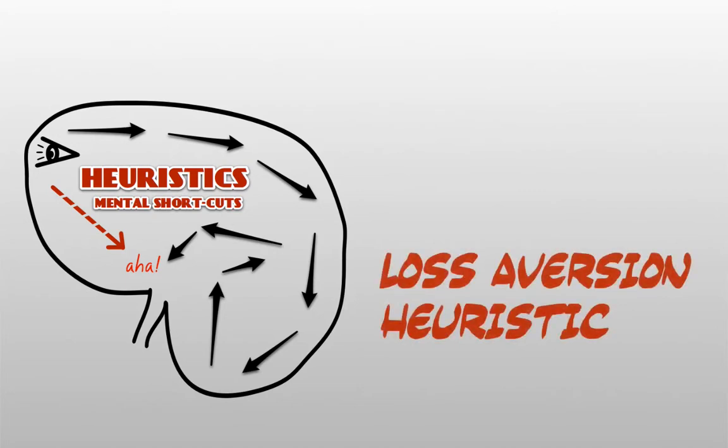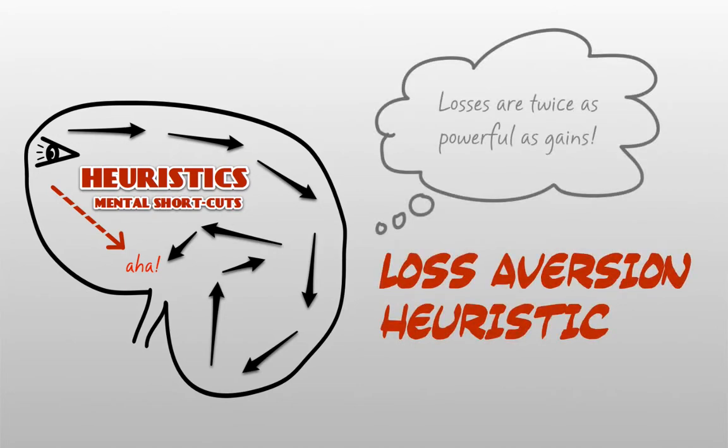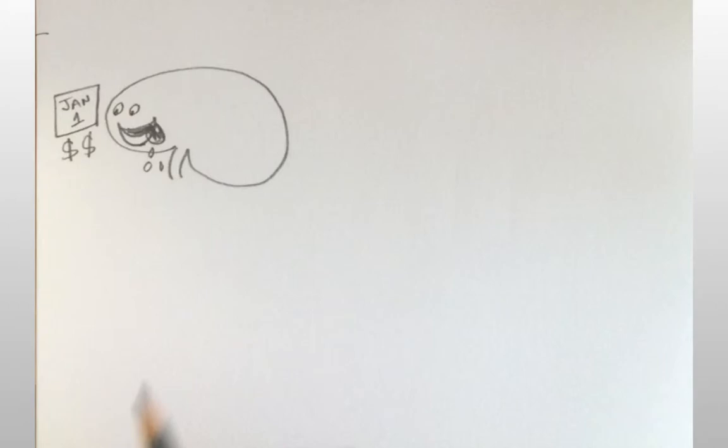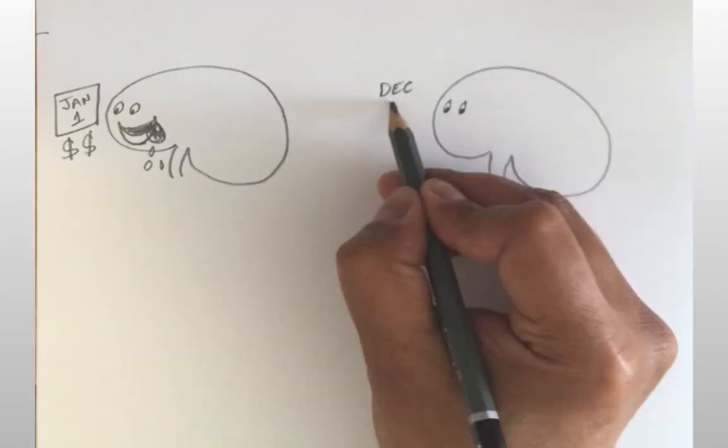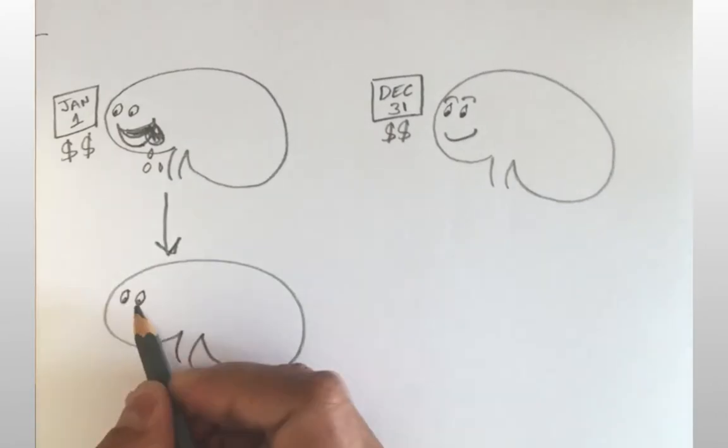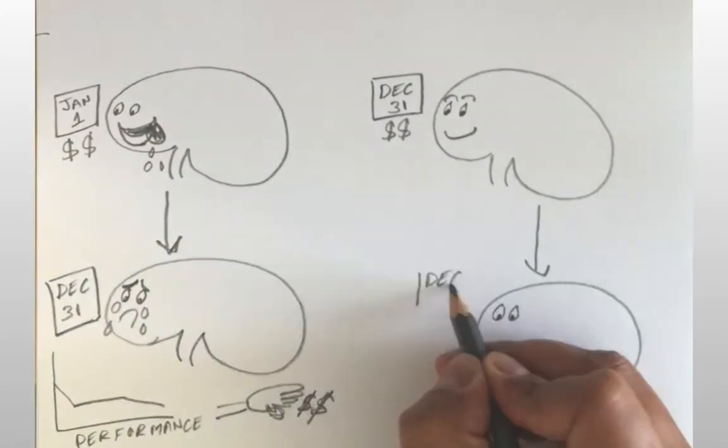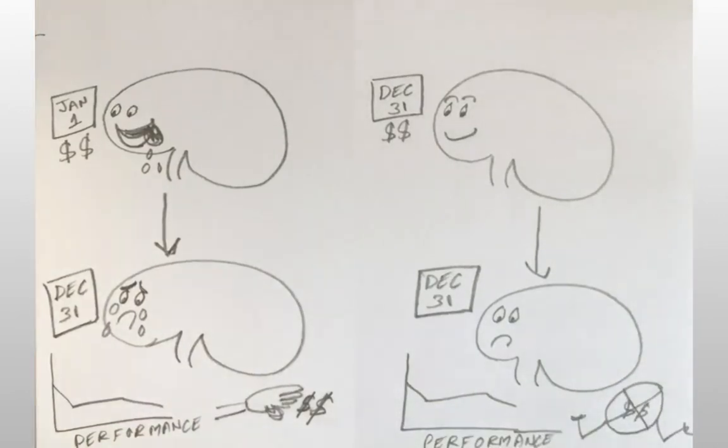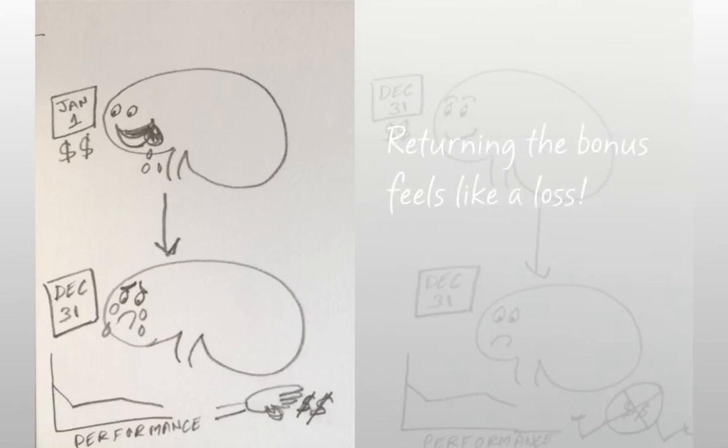Another heuristic is loss aversion. Psychologically, losses are twice as powerful as gains. Consider this: you are given a bonus at the beginning of a year and you are told that if you don't perform well, at the end of the year you will have to return the bonus, versus you are offered a bonus at the end of the year based on the same level of performance. How bad will you feel if you have to return the bonus you got at the start of the year versus if you do not receive the bonus at the end of the year? This is because returning the bonus feels like a loss which hurts you more than winning a reward, even though financially they are both pretty similar.